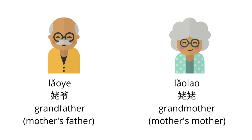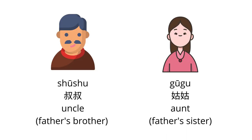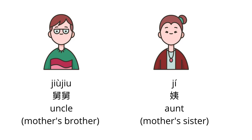Grandfather — mother's father: 老爷. Grandmother — mother's mother: 姥姥. Uncle — father's brother: 叔叔. Aunt — father's sister: 姑姑. Uncle — mother's brother: 舅舅. Aunt — mother's sister: 姨.